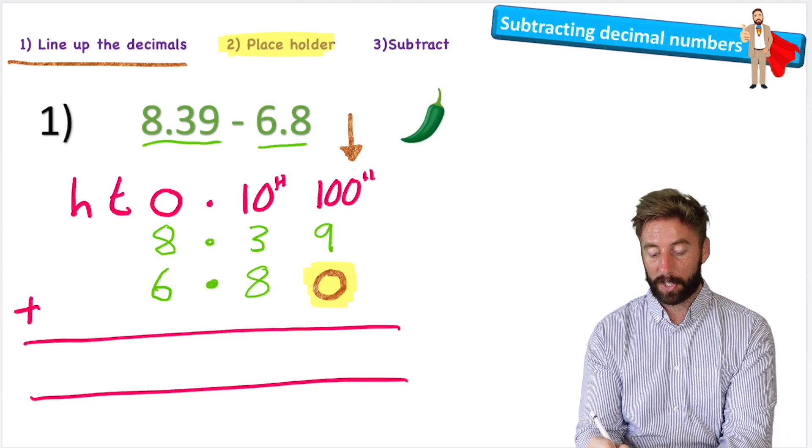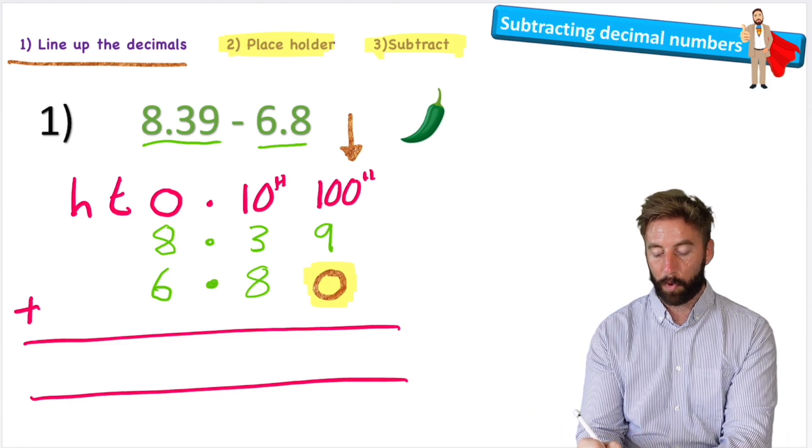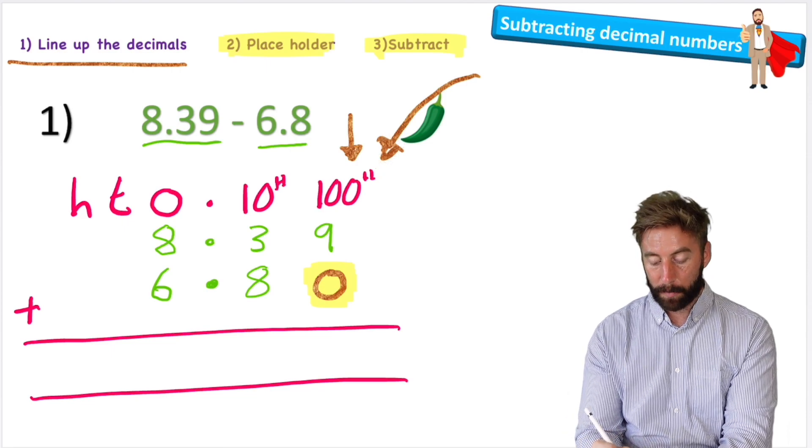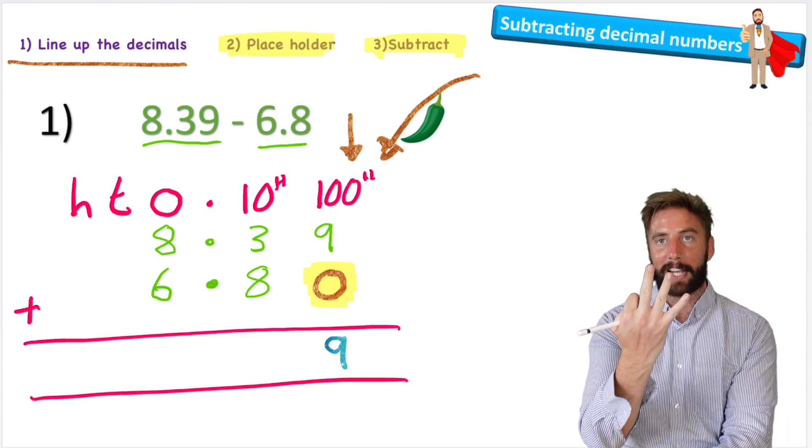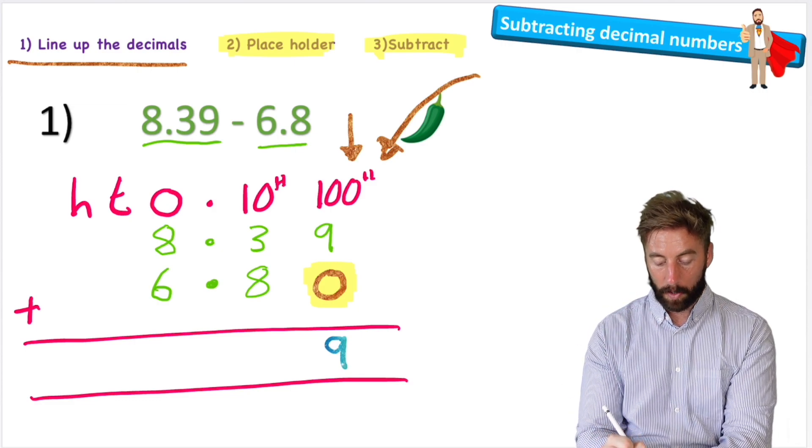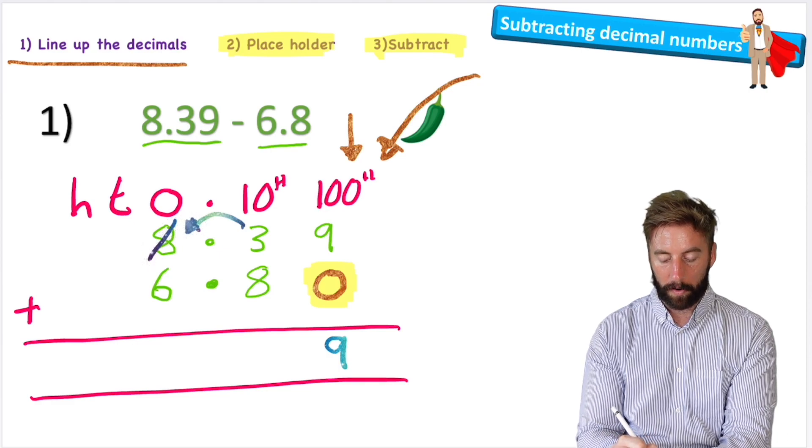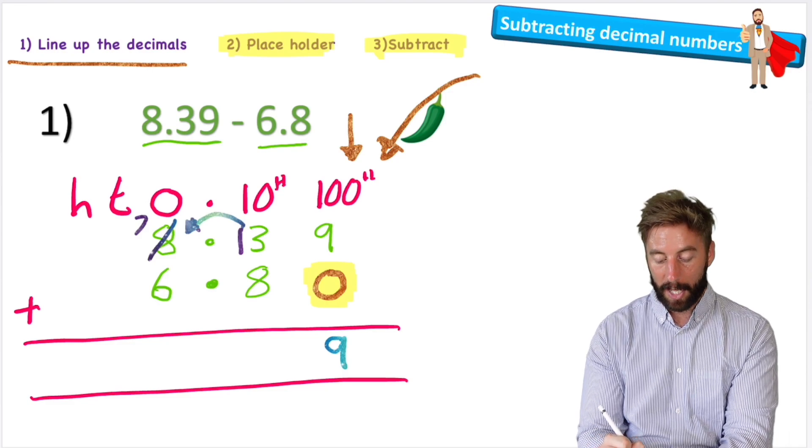So step three just says subtract, and I'm going to do that as normal, starting with the smallest value, which in this case is my hundredths. So nine subtract zero is nine. Three subtract eight I obviously can't do—I have three fingers, I cannot take eight of them away—so I'm going to have to look next door and borrow a whole one from here. Take that to a seven, make the three a thirteen. Thirteen subtract eight is five.